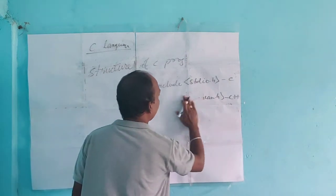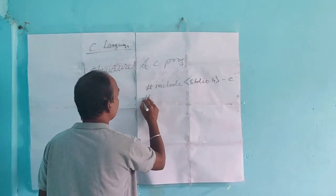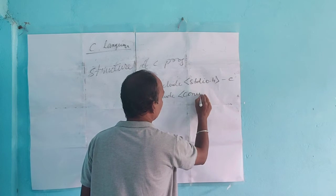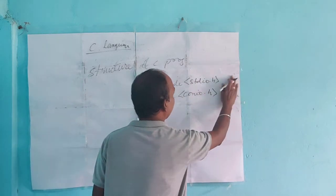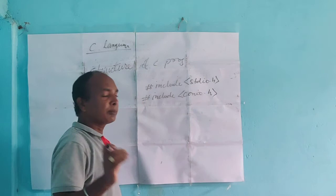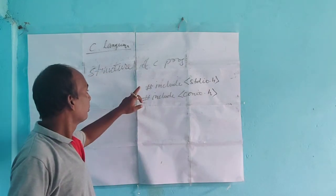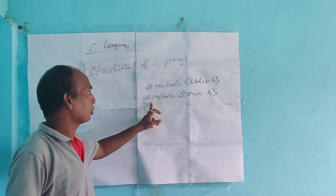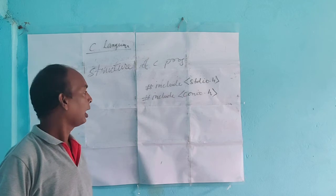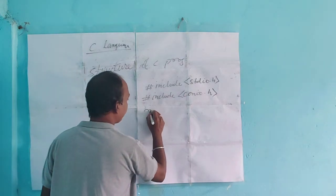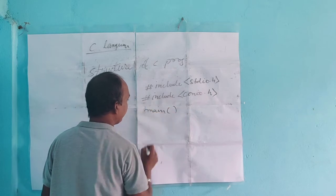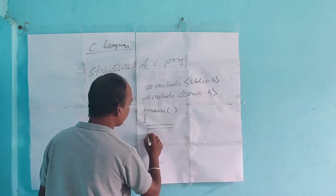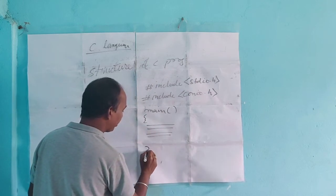The second line is #include conio.h. So when starting any C program, the first two lines must be #include stdio.h and #include conio.h. After that, you write main() followed by curly brackets — whatever is written between these curly brackets is the body of the program.